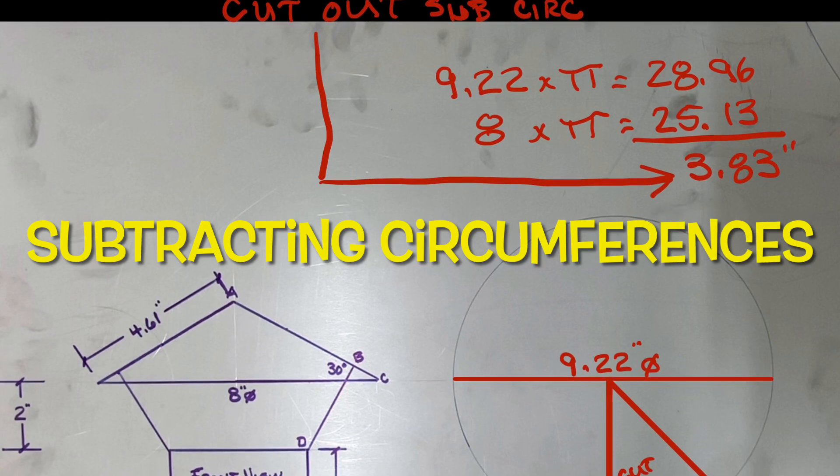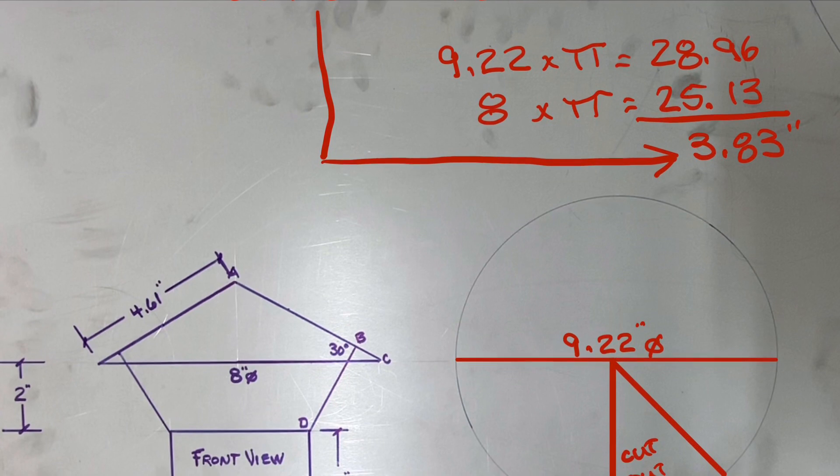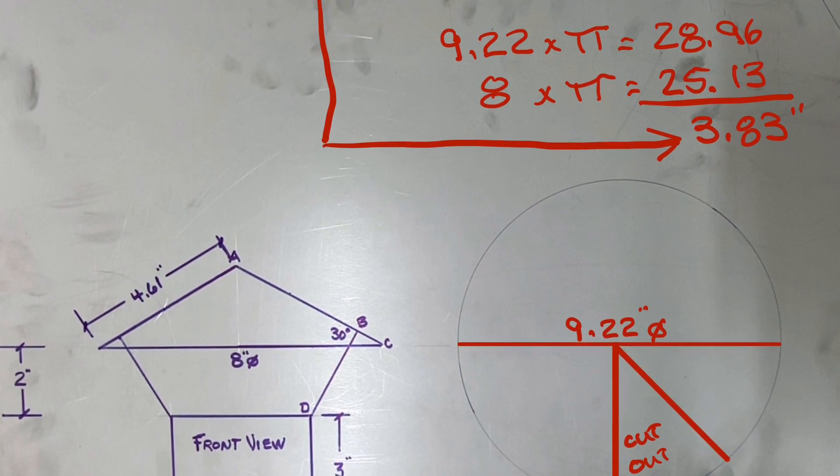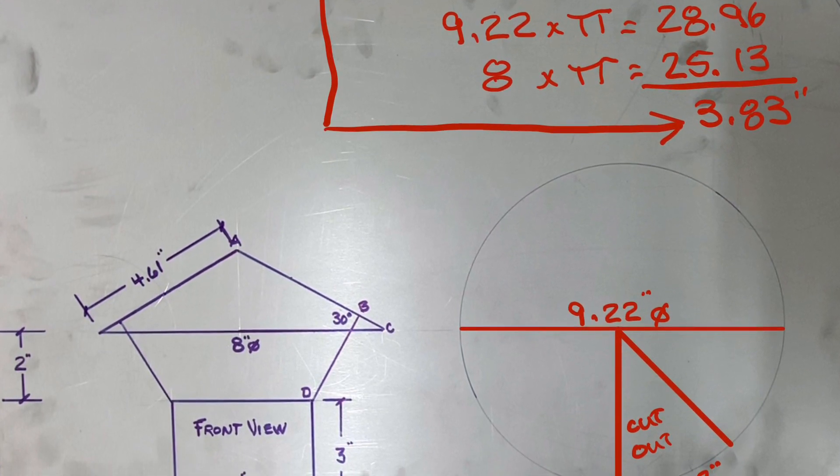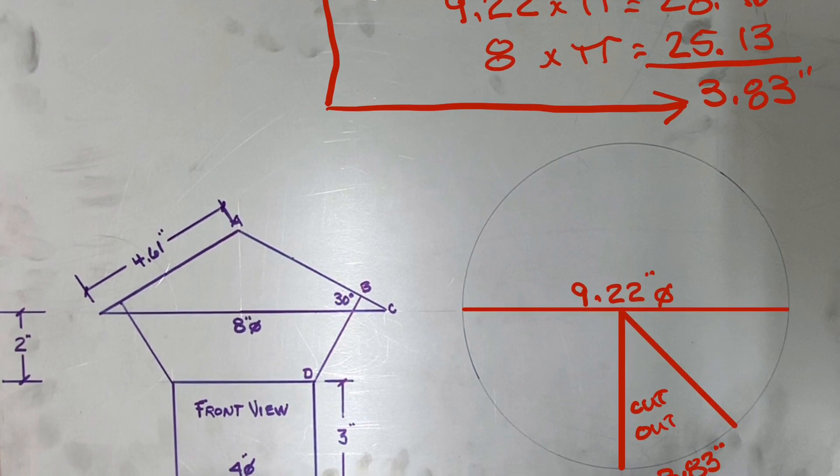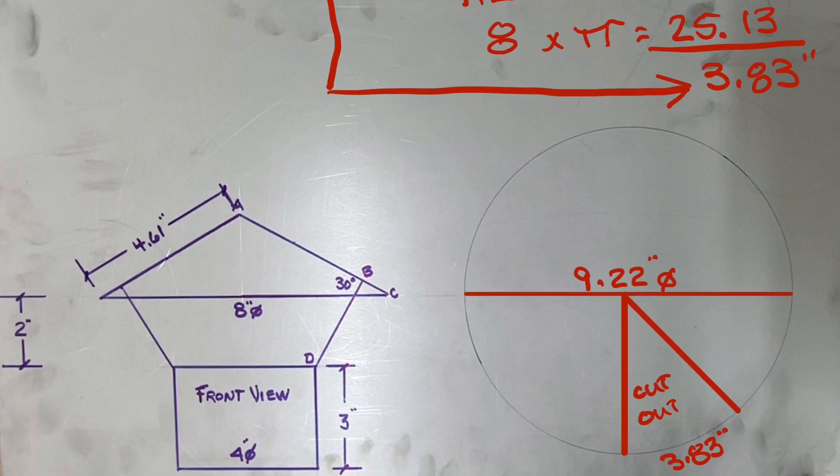And the third way is to subtract circumferences. We know if the pattern circumference is 9.2 diameter times pi equals 28.96, and the finish cap is 8 times pi, you subtract one from the other and you would get 3.83 as your cutout.